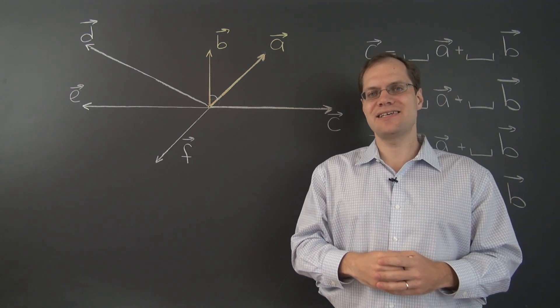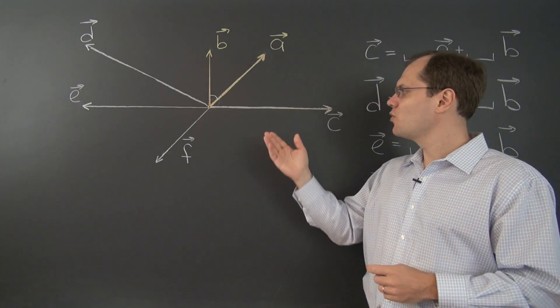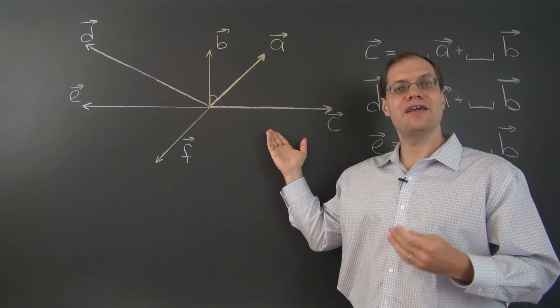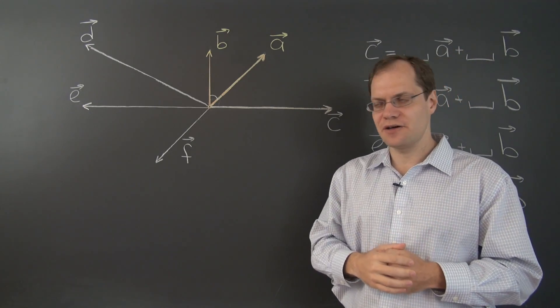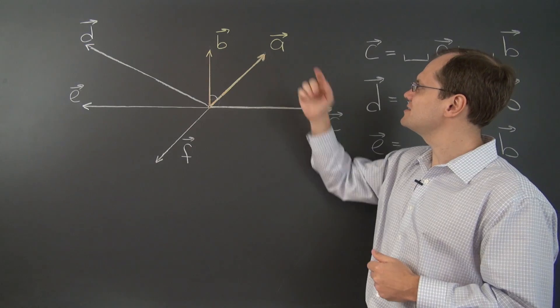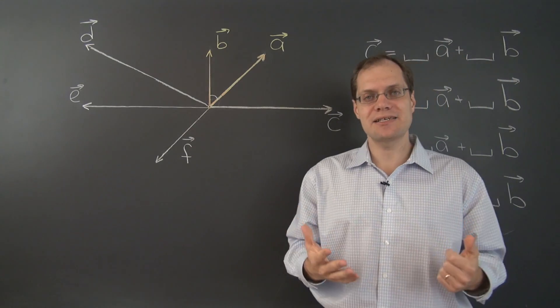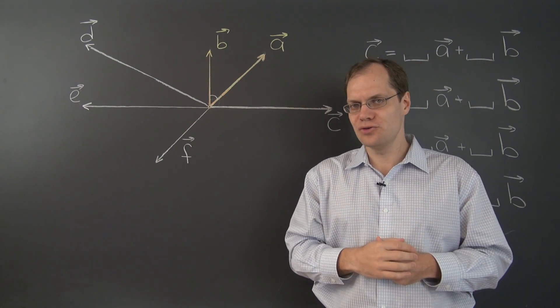We will now consider a second set of decomposition examples with geometric vectors. You will notice that compared to the first video, I simply switched the vectors c and a. So now the task is the same, but the vectors are new.